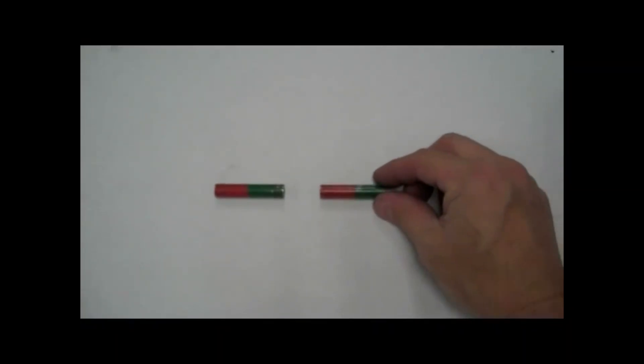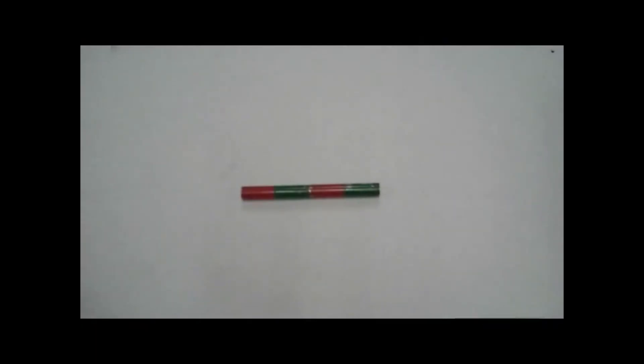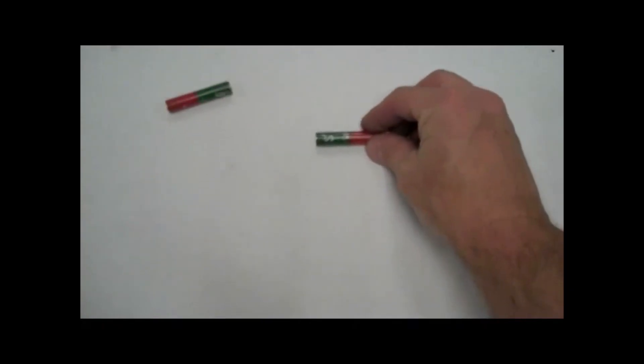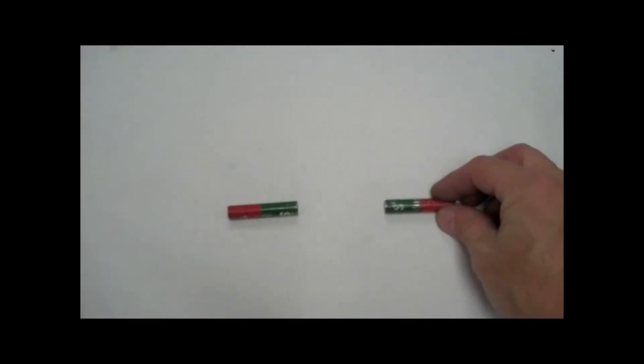We know that opposites attract when dealing with electricity, just as can be seen with magnets. Opposite ends attract, while similar ends repel. Movement is based on charge, while separation is based on size.